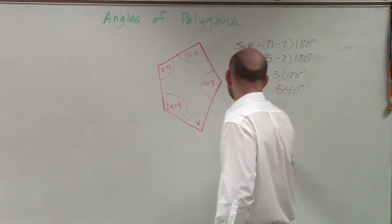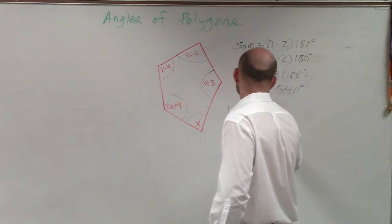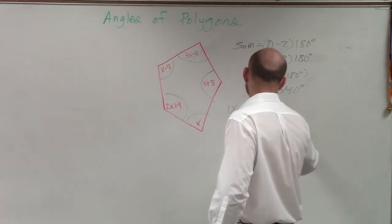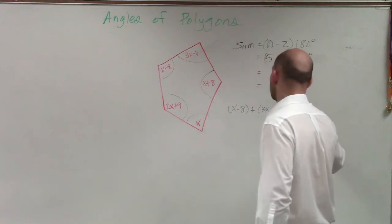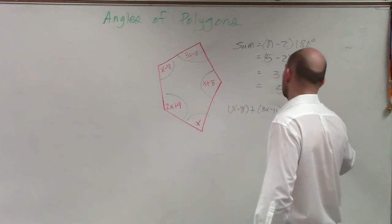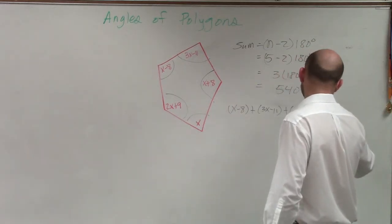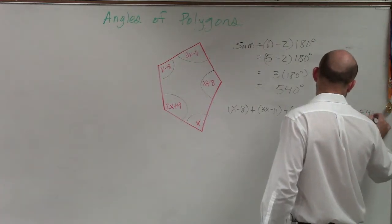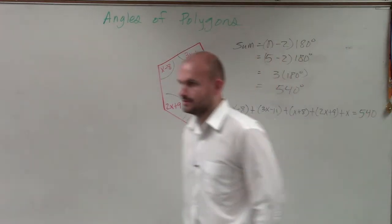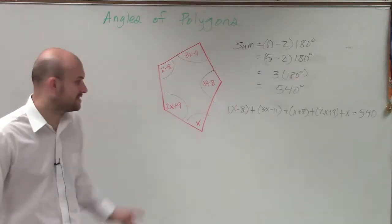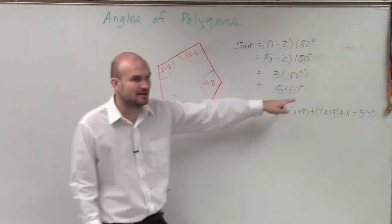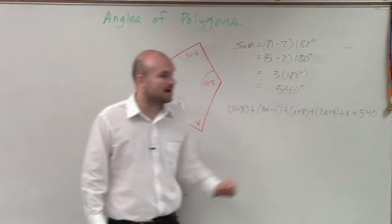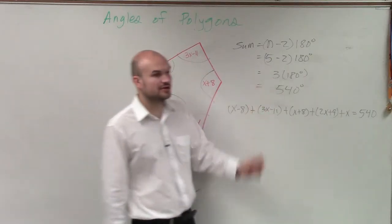We can now just do x minus 8 plus 3x minus 11 plus x plus 8 plus 2x plus 9 plus x equals 540. OK, does everybody see what I did? I took each one of these angles and I added them up to equal 540 degrees.